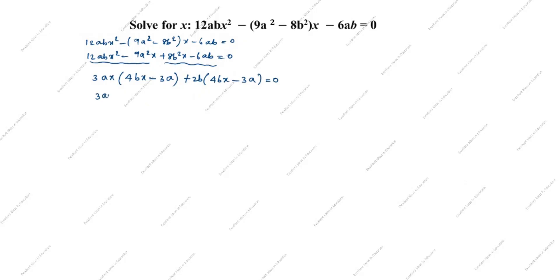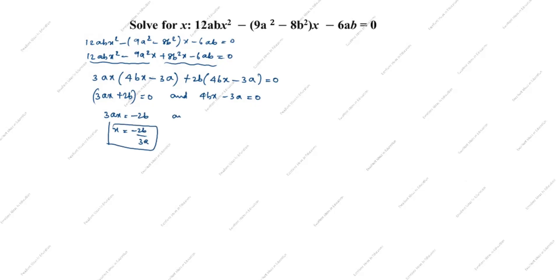Taking the common factor out: (3ax plus 2b)(4bx minus 3a) equals 0. From the first factor: 3ax equals minus 2b, so x equals minus 2b divided by 3a. From the second factor: 4bx equals 3a, so x equals 3a divided by 4b. This completes Method 1.